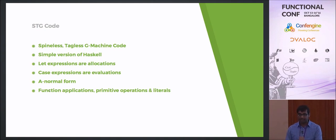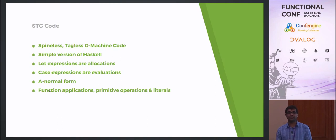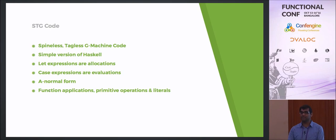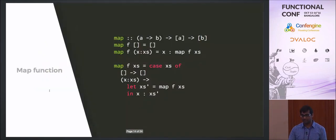Other parts of STG code include function applications, primitive operations, and literals. Primitive operations are things you can't implement in Haskell — they have to be implemented at the runtime system level, like integer addition. The runtime only knows how to delay evaluations, unbox things, and box things; it doesn't know how to do the load of operations, so you use primitive operations for that.